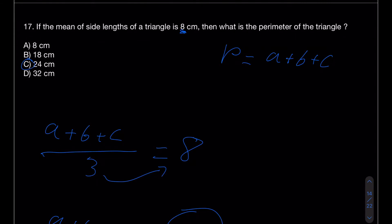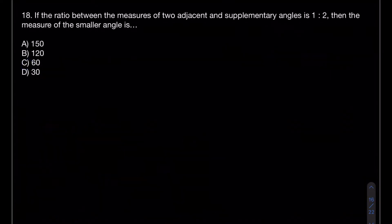This looks easy, but if you didn't know what mean or average is, or what the perimeter of a triangle is, you wouldn't have been able to do it. Make sure you know your fundamentals — it makes life a lot easier. Question 18 asks: if the ratio between two adjacent supplementary angles is 1 to 2, what is the measure of the smaller angle?